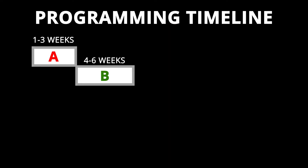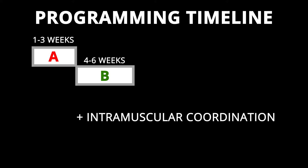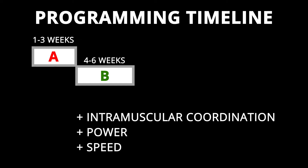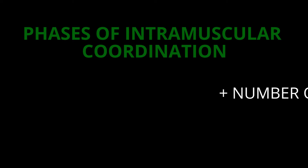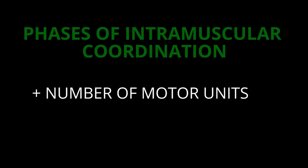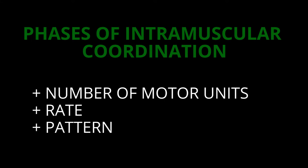Then you progress into the next four to six-week area, focusing on intramuscular coordination — this is where we develop power and speed. You have the movement patterns developed, and now we focus on enhancing your ability within those patterns. This breaks into three phases: first is the number of motor units — the muscle fibers that are called upon. Then as you progress, it's the rate — how fast they can be called upon to move the load. And finally, you have the pattern, where we develop consistency in power. This is where you don't know your own strength.